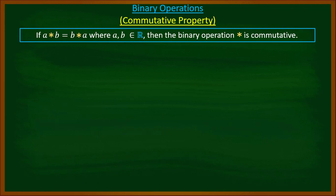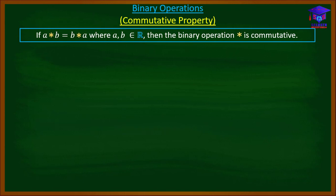Today we are going to talk about commutative property. If a★b is equal to b★a, where a and b are real numbers, then the binary operation star is commutative. Assuming we pick two real numbers a and b and perform the operation star on them — whichever one comes first — if the results are the same, then we say the operation is commutative.